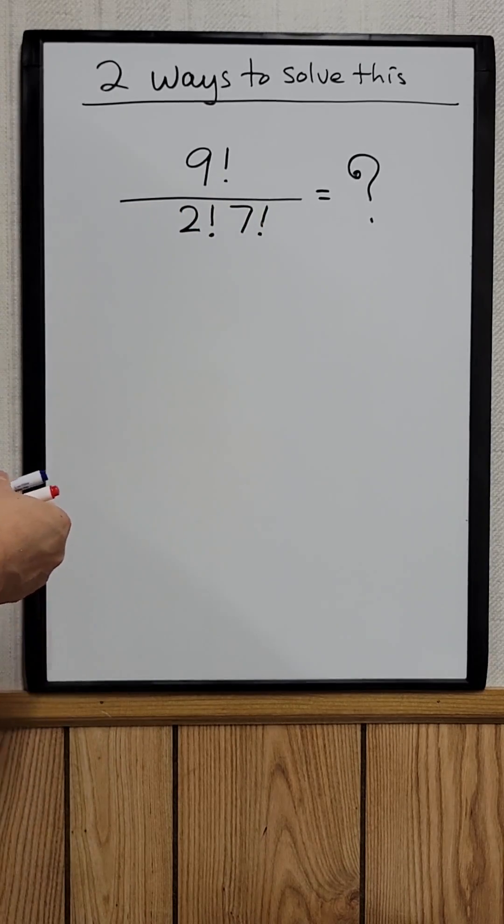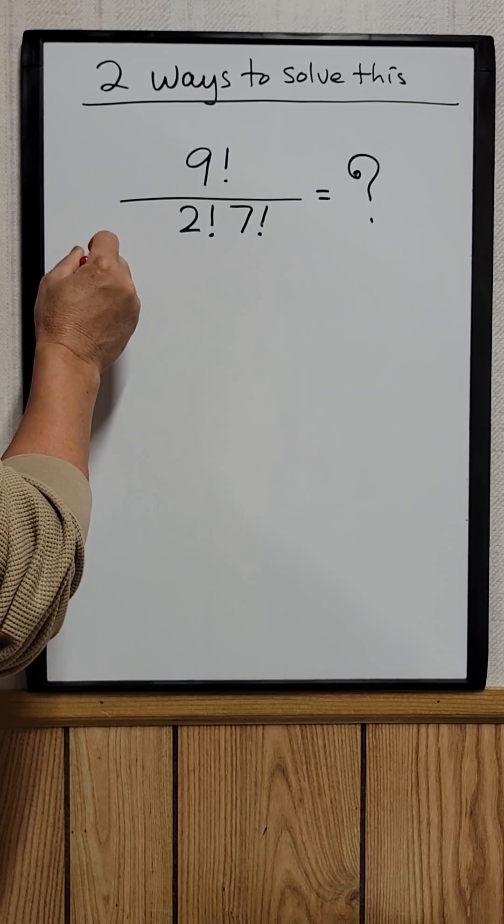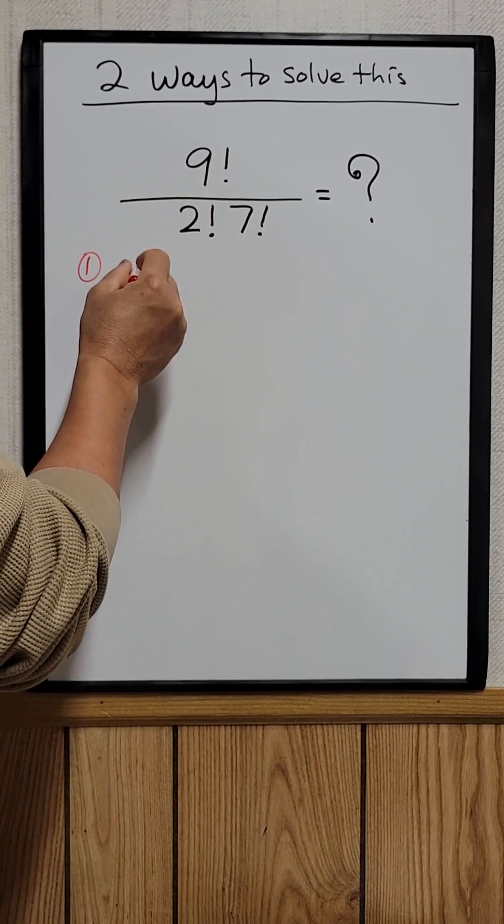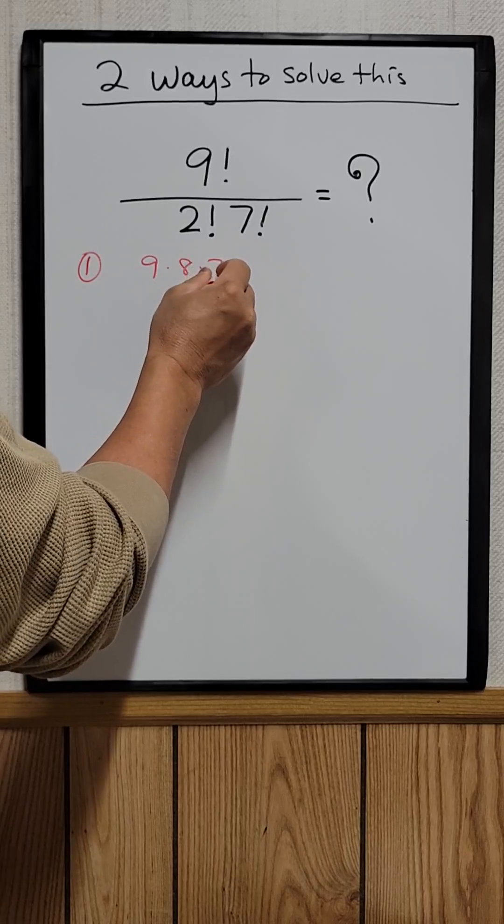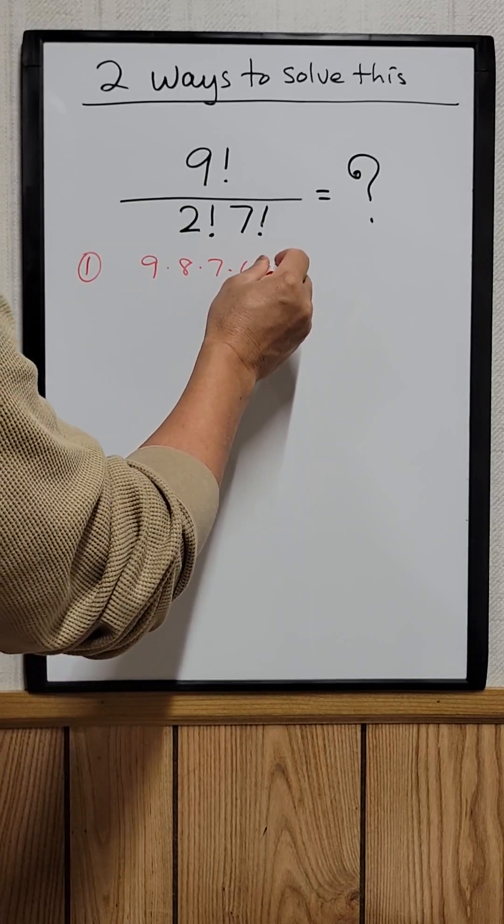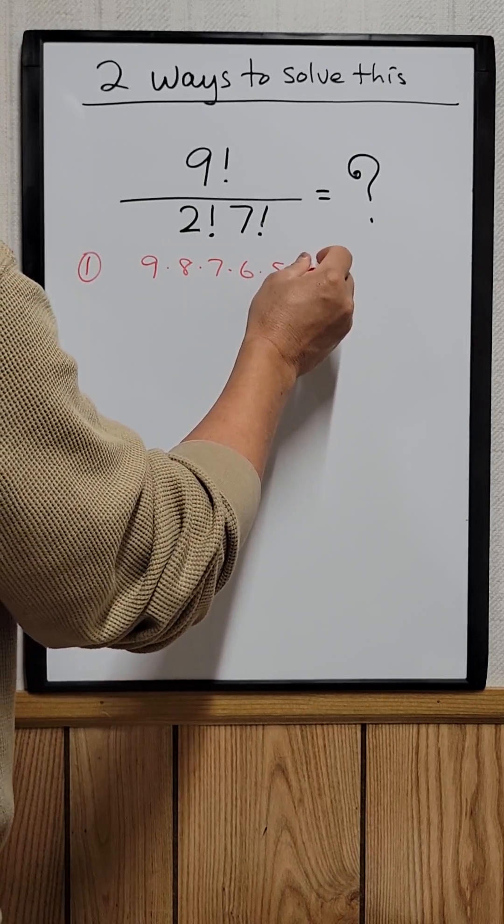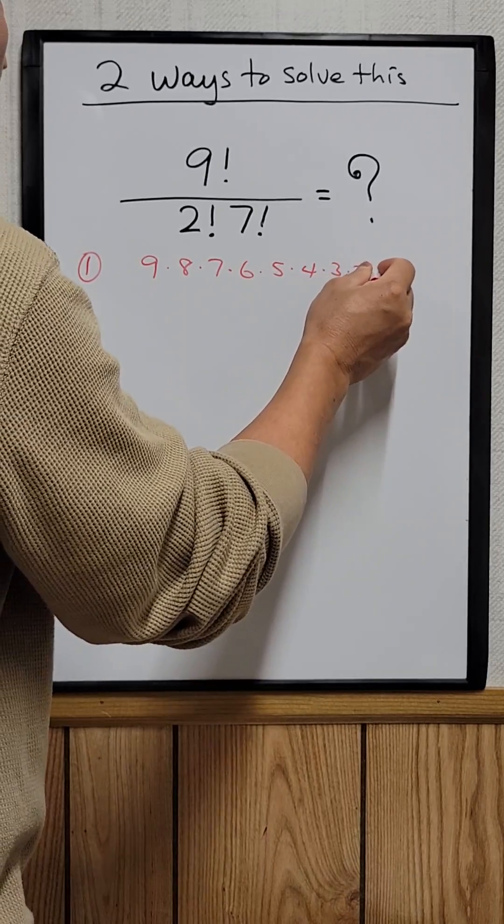So the first method is just nine factorial, which is nine times eight times seven times six times five times four times three times two times one.